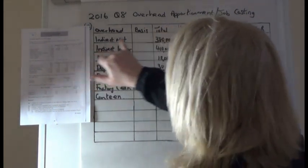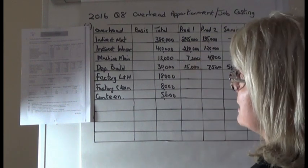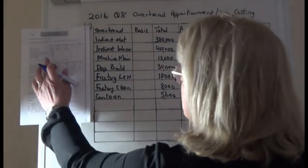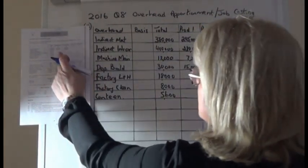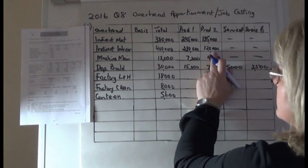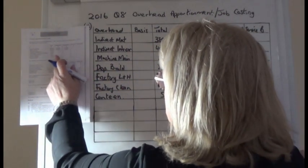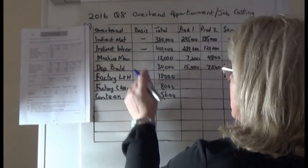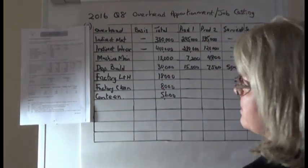The indirect materials of 380,000 are already split between Production 1 and 2. The indirect labour of 400,000 is already split on the given table at 280 and 120, with nothing in the service departments. Machine maintenance is next.